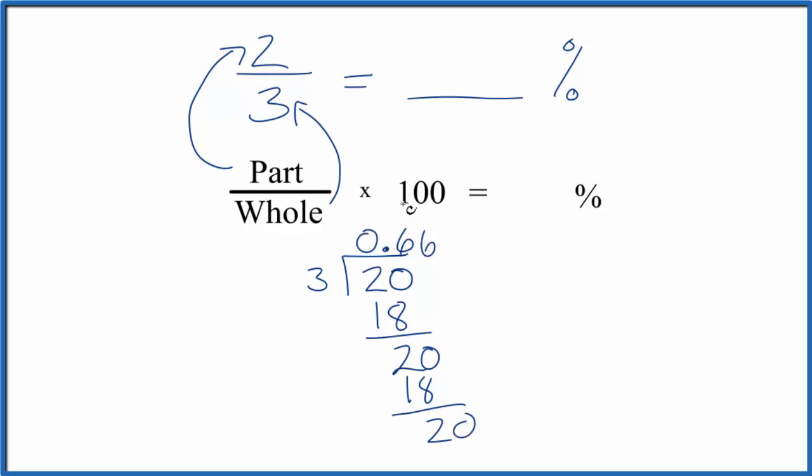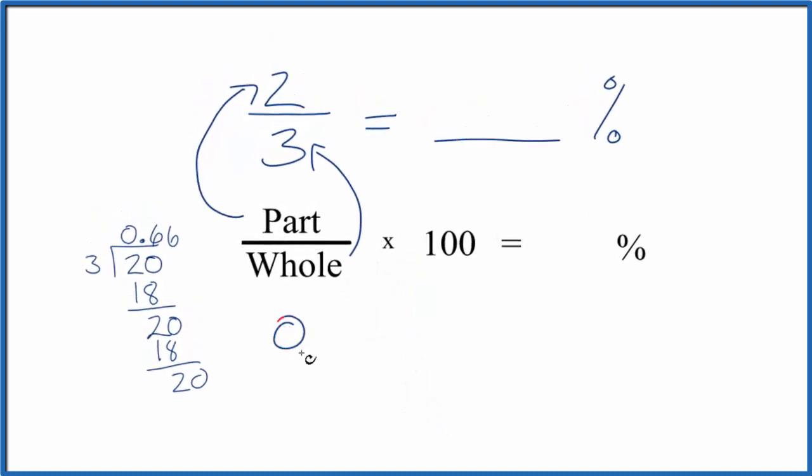So the decimal 2 thirds as a decimal is 0.6 with the 6 repeating. But now we have our part over a whole as a decimal. So let's call this 0.666 and then multiply that by a hundred.